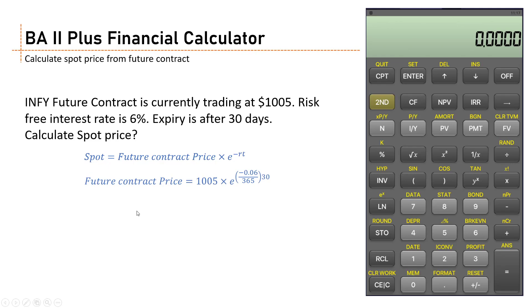Hello friends, this is Praveen Khaitan. In today's video we will learn about calculating spot price from future contract using simple compounding and discounting. Infosys future contract is currently trading at $1005. Risk-free interest rate is 6% and expiry date is 30 days. This future contract is calculated based on 30 days expiry and the interest rate is 6%. Now we have to calculate the spot price.